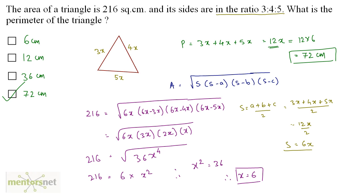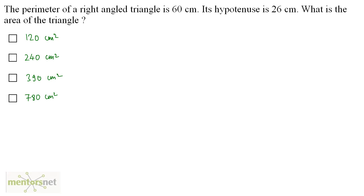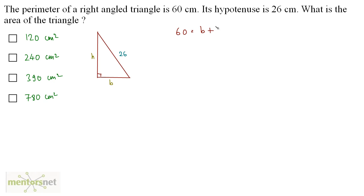The perimeter of a right angle triangle is 60 centimeters and its hypotenuse is 26 centimeters. What is the area of this triangle? Let the base be b and height be h. The perimeter gives us: 60 equals b plus h plus 26, so b plus h equals 34. Let that be equation 1.